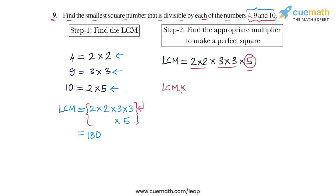So if you multiply the LCM by 5, you get the number 2 into 2 into 3 into 3 into 5 into 5. Now this number is a perfect square because it has a pair of 2, a pair of 3, and a pair of 5. And because it is a multiple of the LCM, it is also a multiple of all the three numbers 4, 9, and 10.